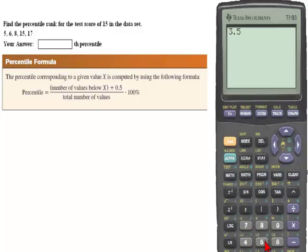The procedure says to then divide by the total number of values and we can see here that that is 5. There are five numbers totally. And then we will multiply by 100% and that will give us the percentile which is the 70th percentile.